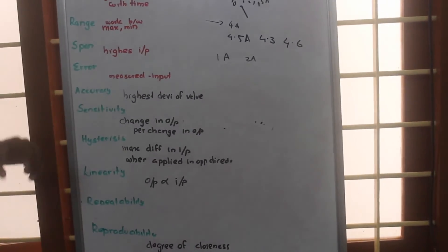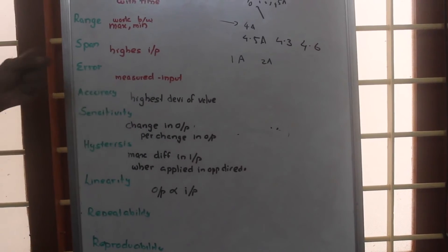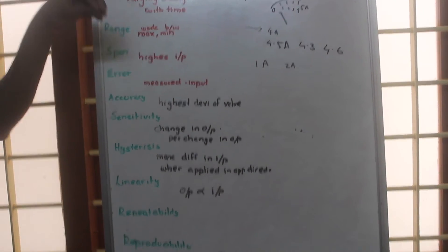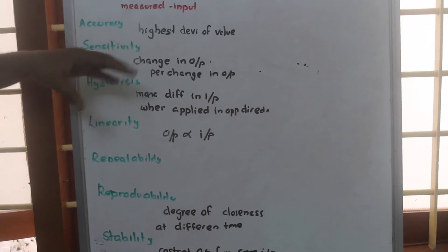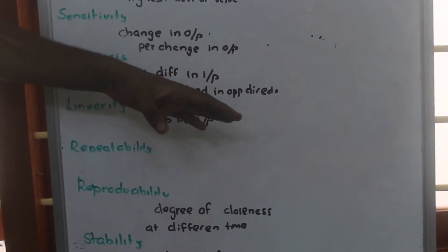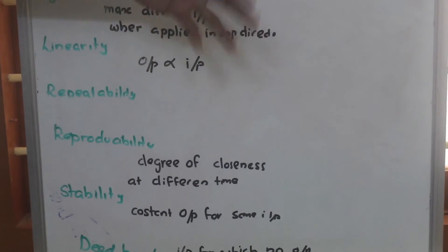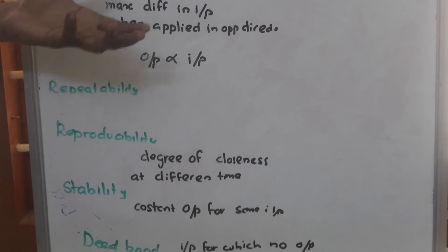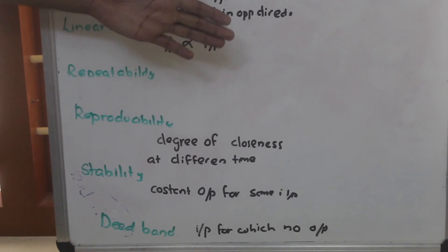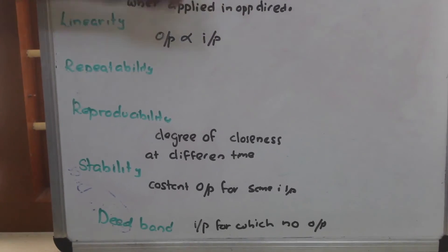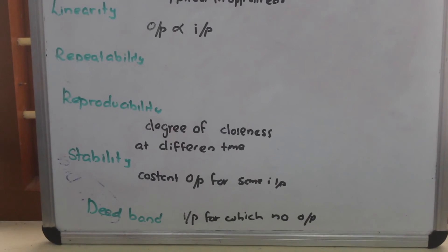Repeatability means suppose now we are doing an experiment and we are getting different sets of outputs. Now we will be giving the same input and doing the same experiment and getting the output. In electronic systems, sometimes the path may get heated up and the output for the same input may change during the experiment. So if the output for the same input is constant during an experiment, we will call it as repeatability.